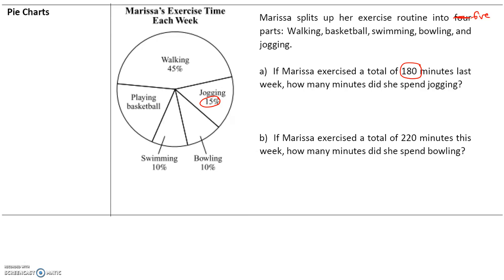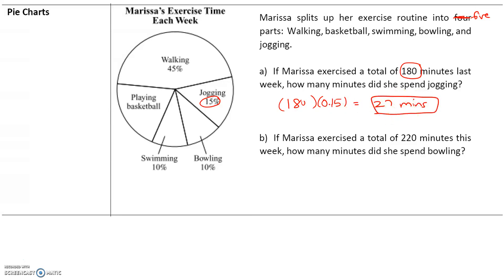We take the total number of minutes she exercised, which is 180, and multiply by 0.15 — the decimal representation of 15%. 180 times 0.15 equals 27 minutes. Please do the second part by yourself and we will go over it in class.